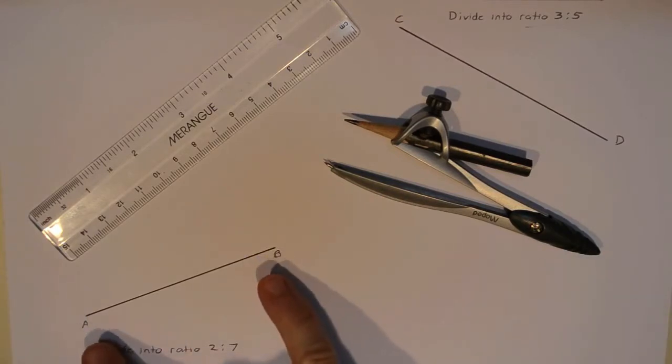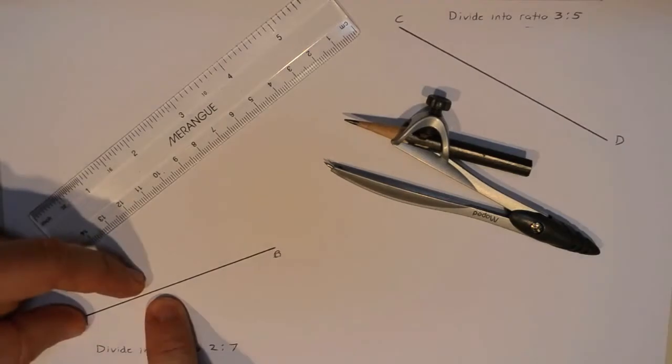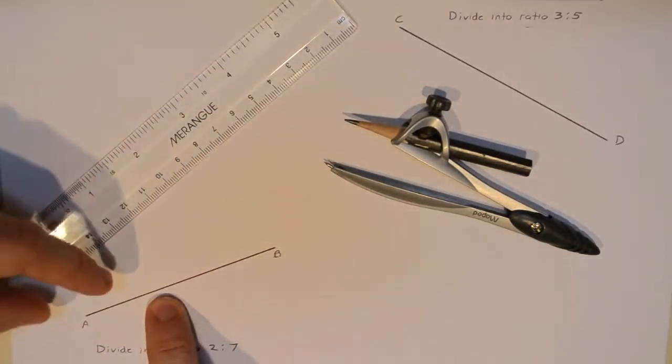So what I mean is I have a line segment like AB, and I want to divide it into a ratio of 2 to 7. That means I need to find the point on this segment that splits it so that this part of the segment to this part of the segment is in the ratio of 2 to 7.